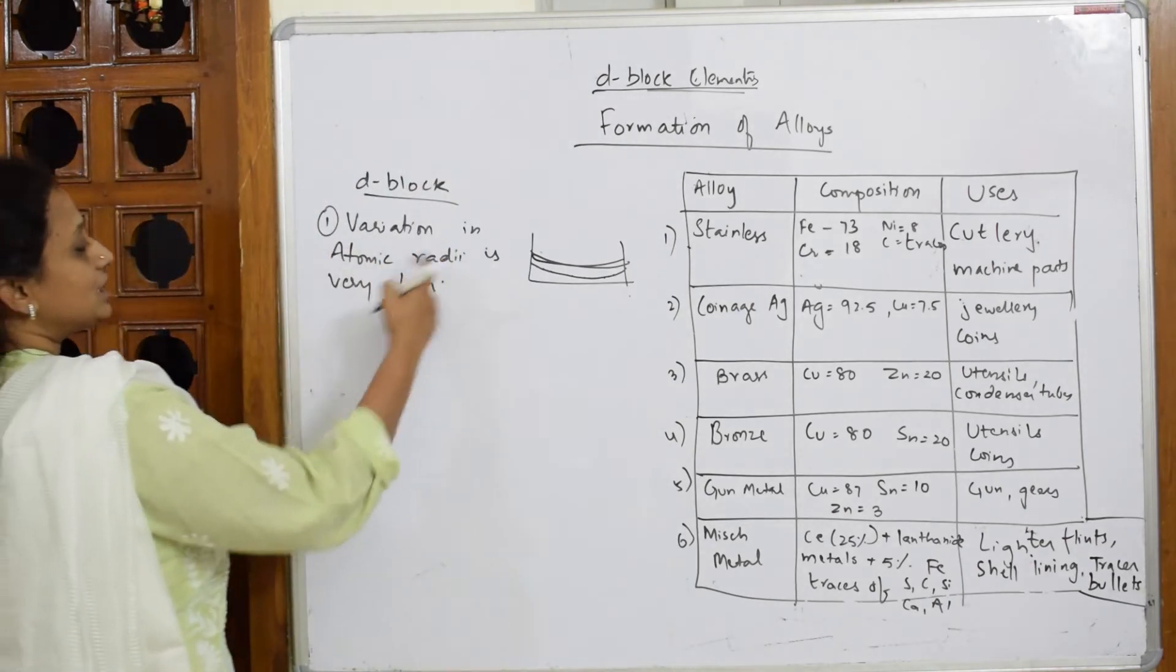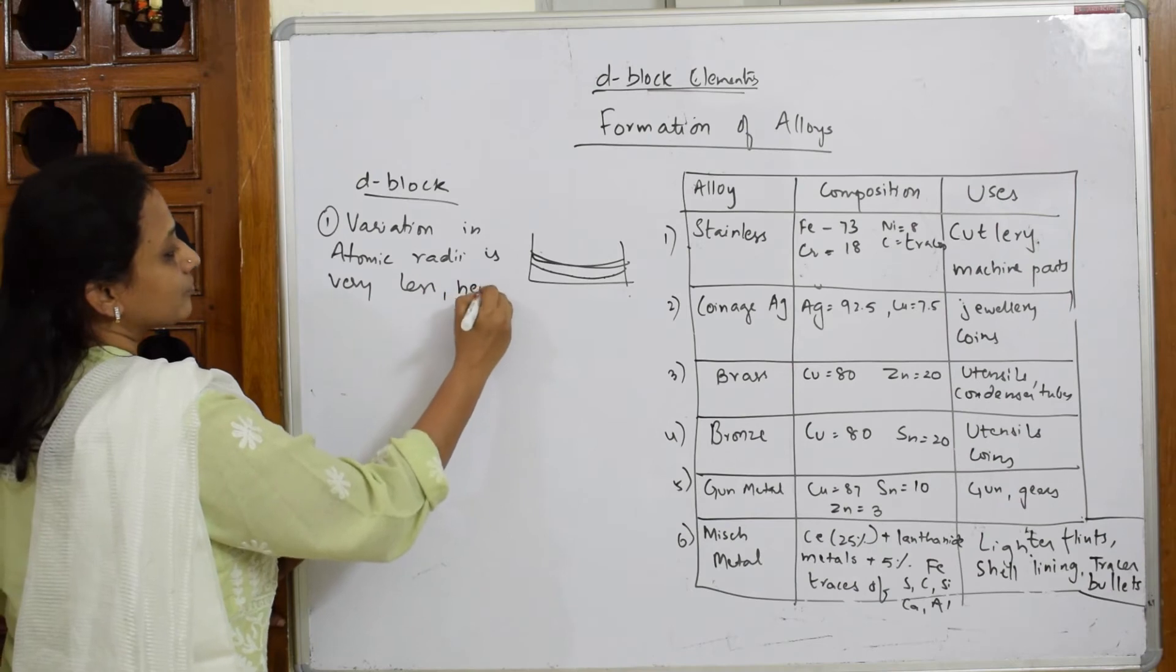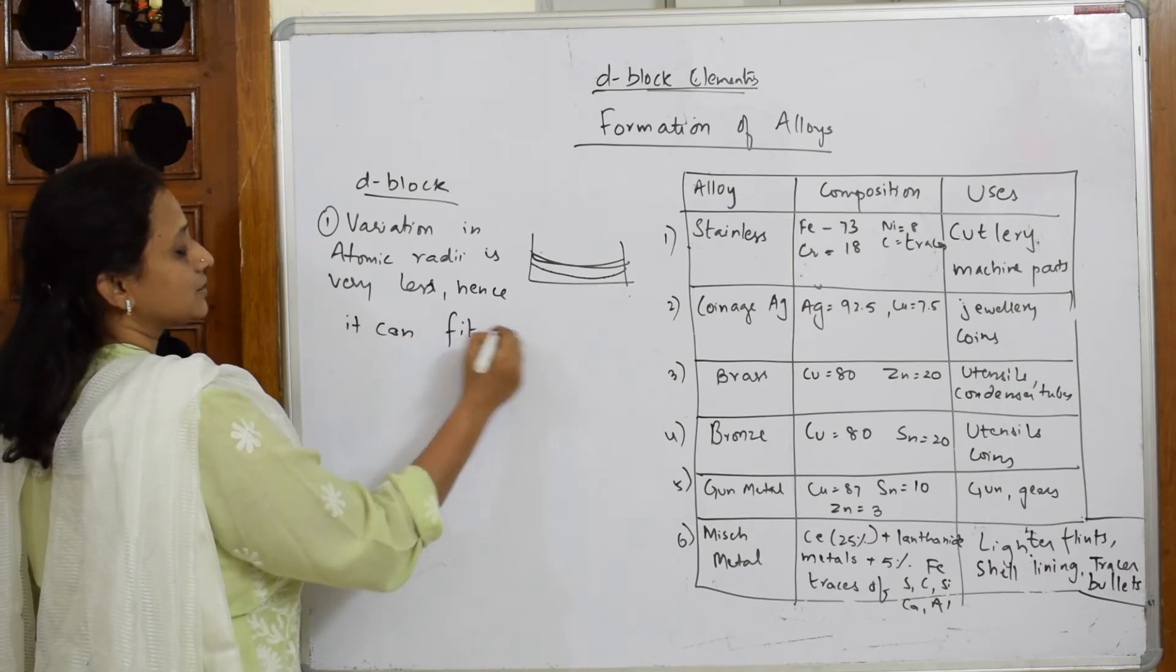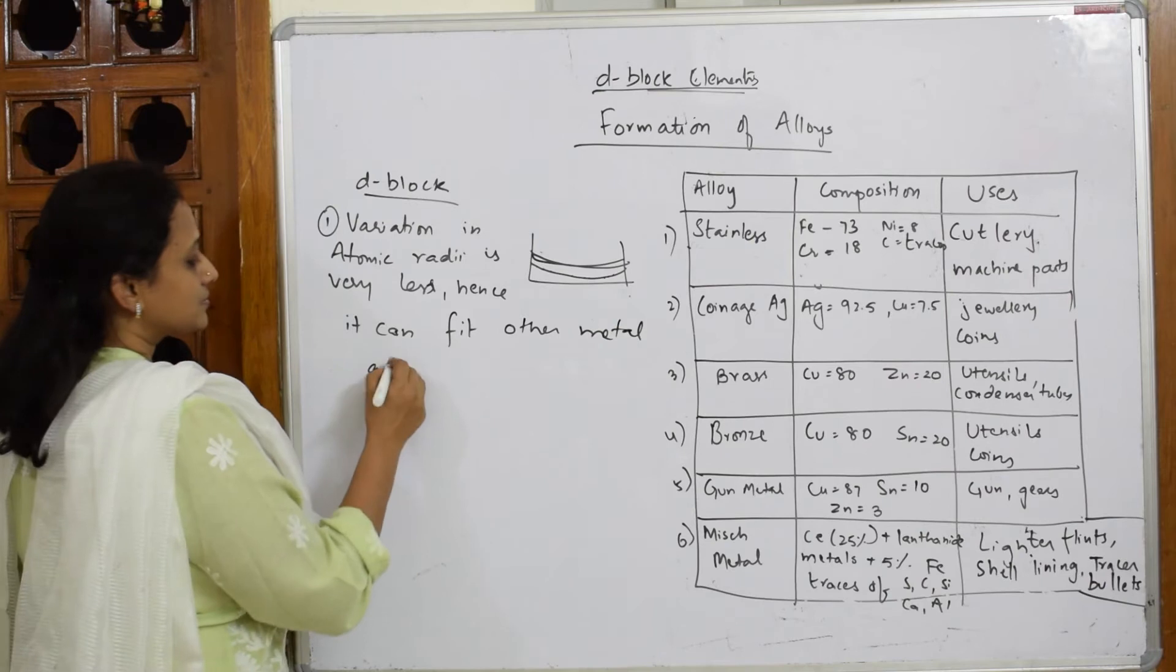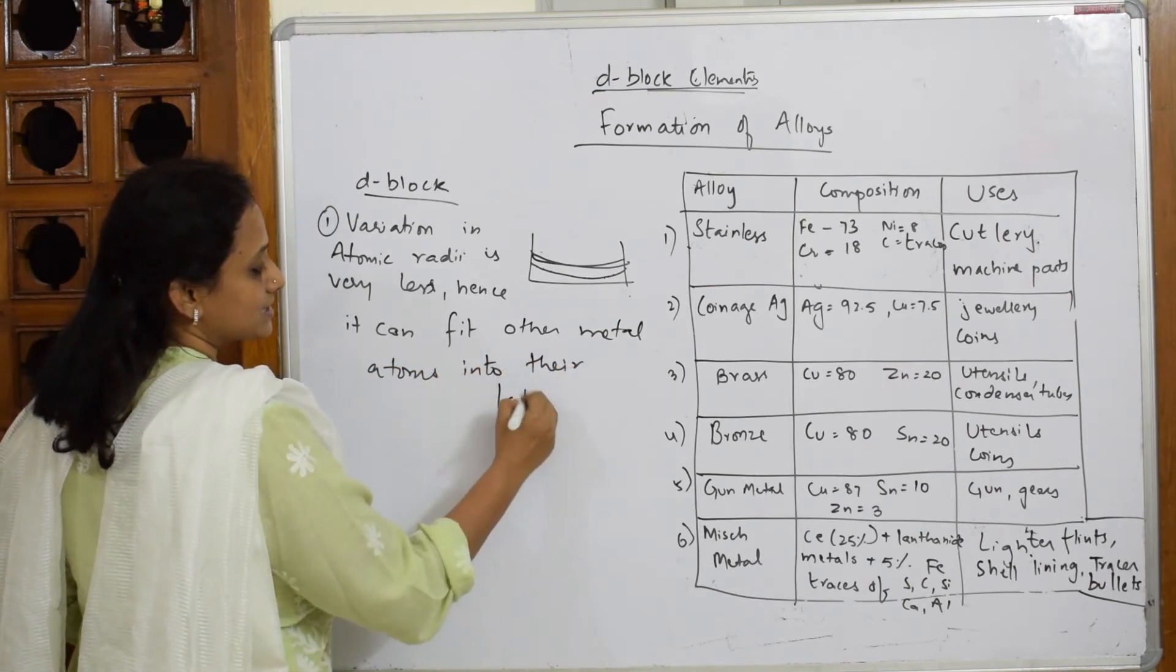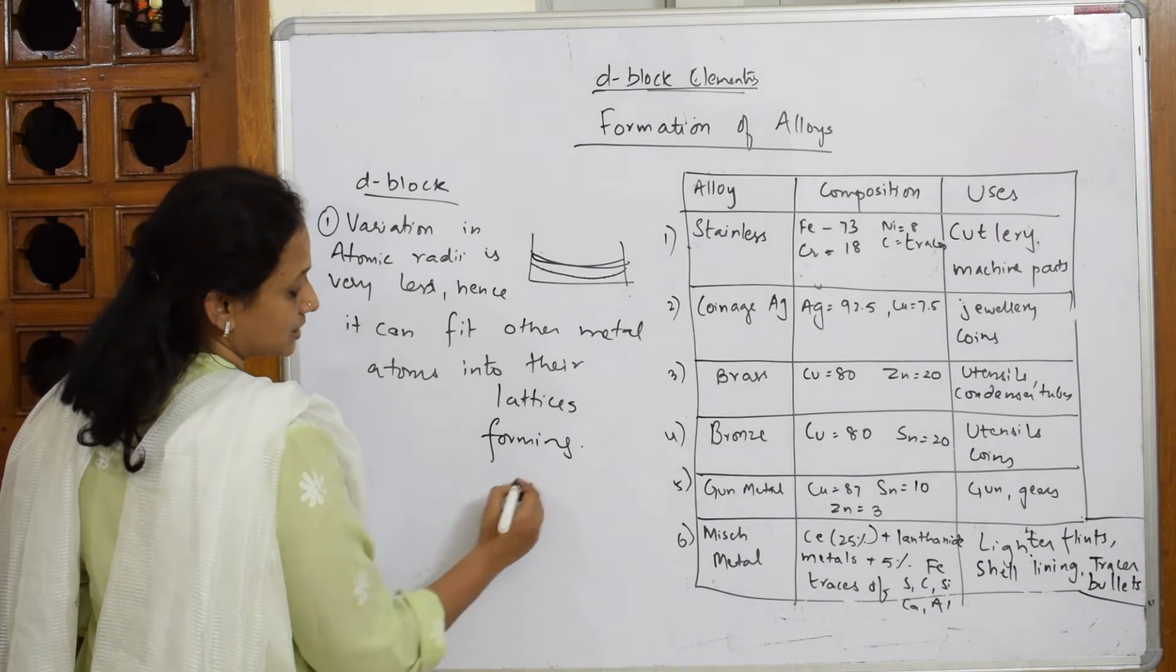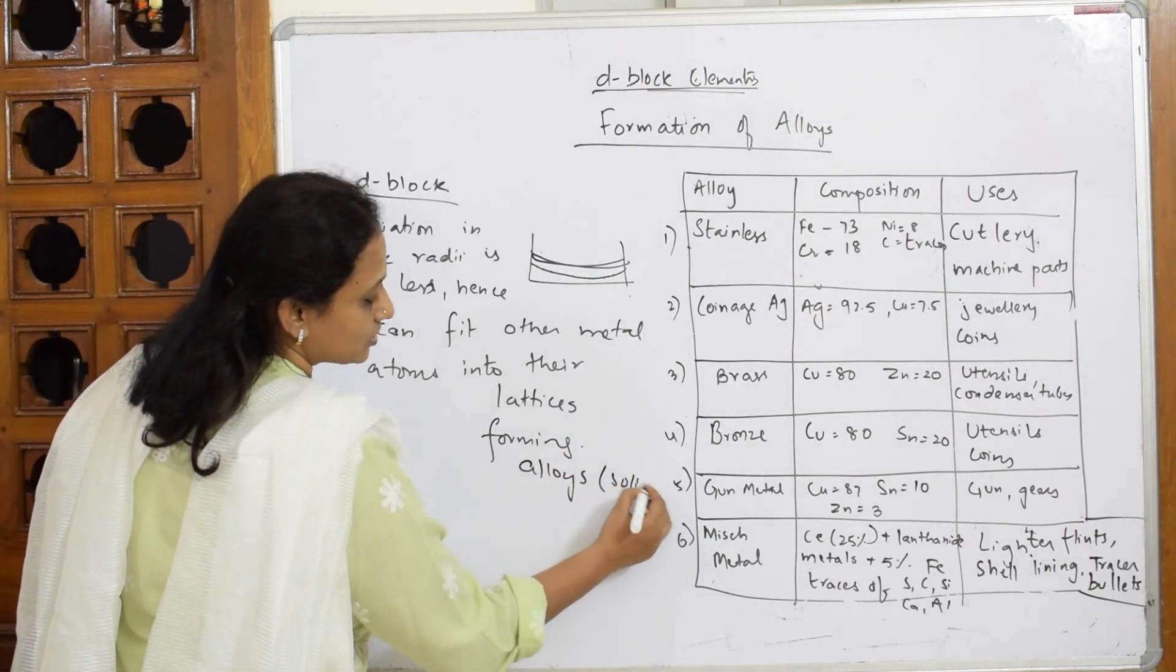The most important thing: variation of atomic radii is very less. Hence, the metal atoms can fit into their lattice sites or crystal lattices, forming alloys, which is a solid substance.